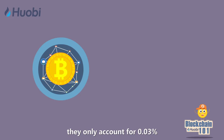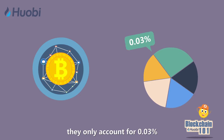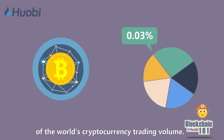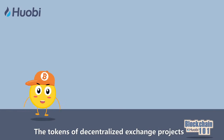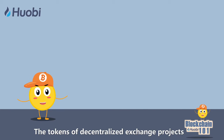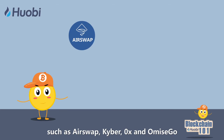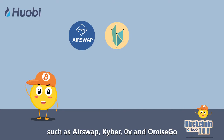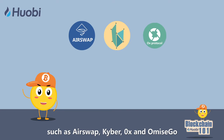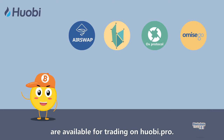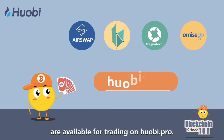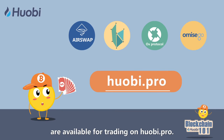account for 0.03% of the world's cryptocurrency trading volume. The tokens of decentralized exchange projects such as AirSwap, Kyber, ZeroX, and OmiseGo are available for trading on Huobi.pro.